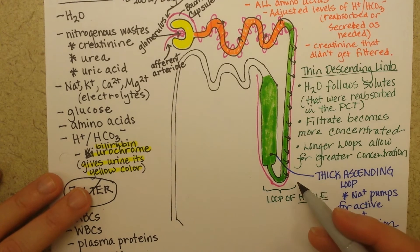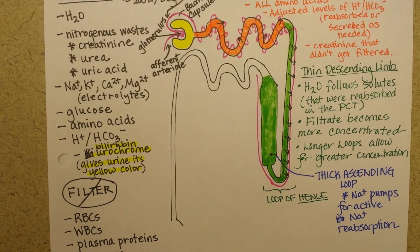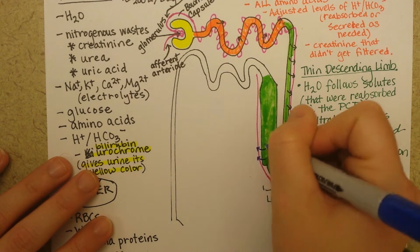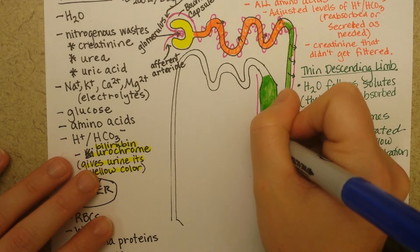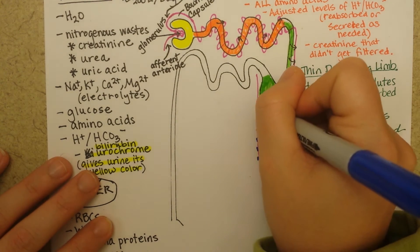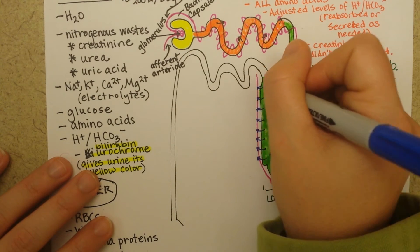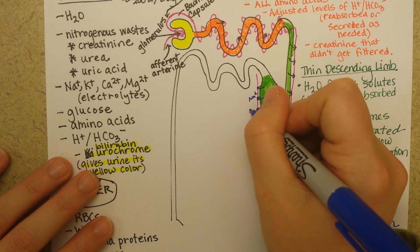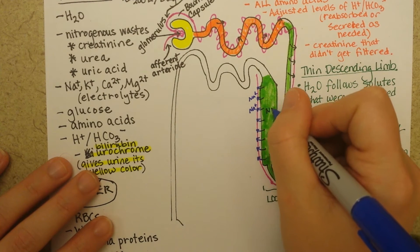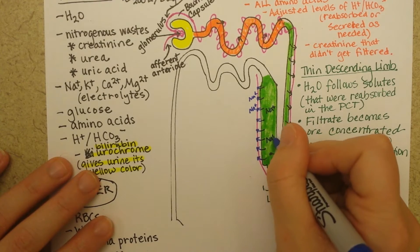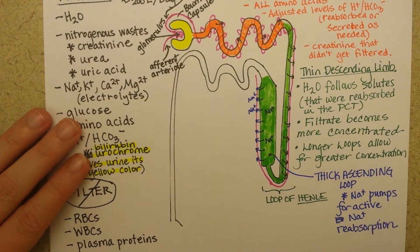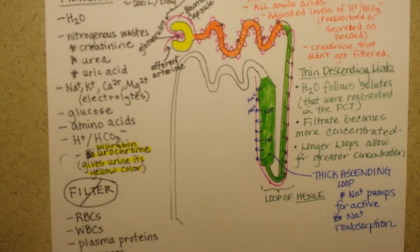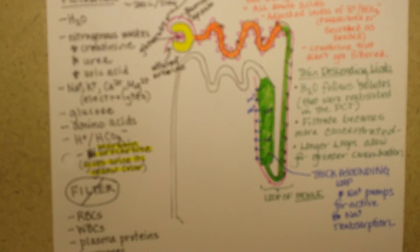Water goes out all the way down the thin descending limb. Then, on the thick ascending limb, what's going out is salt, not water. So the blood is getting saltier at this point — sodium is going out. In fact, these cells are impermeable to water, so water is not even allowed to follow yet. But it will get its chance.